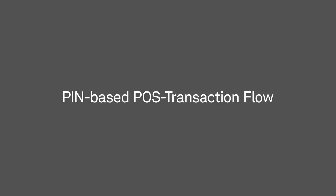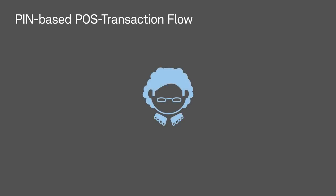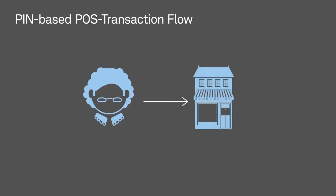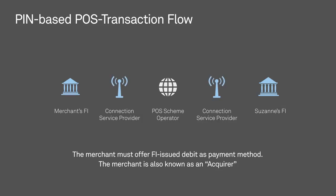Let's look at an in-store debit card purchase to explain the basic flow of a PIN-based POS debit transaction. Say hello to Suzanne — she forgot to bring her lunch to work on Friday and heads over to the deli, paying for a sandwich using her Interac debit card. To initiate the POS transaction, the merchant — in this case the deli — must offer FI-issued debit as a payment method. In this scenario, the deli is also an acquirer, since they acquire or capture transaction data from the POS device. This transaction data is sent to the deli's FI to reconcile the deli's payments.